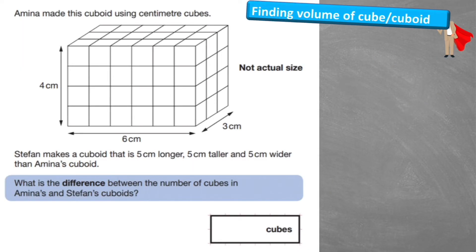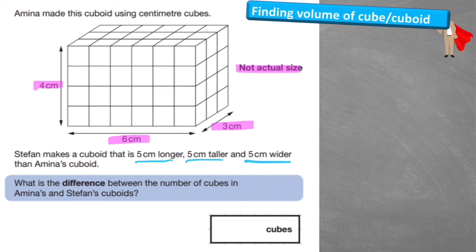Let's have a look at an exam style question. This says Amina made a cuboid using centimetre cubes, with a length of 6, a width of 3, and a height of 4 centimetres — not actual size. Then it says Stefan makes a cuboid that is 5 centimetres longer, 5 centimetres taller, and 5 centimetres wider than Amina's cuboid. What is the difference between the number of cubes in Amina's and Stefan's cuboids?